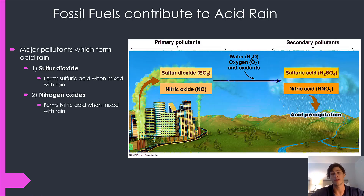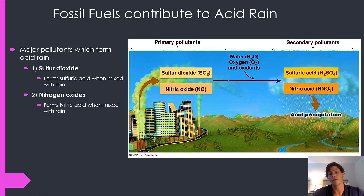There are two major pollutants that cause acid rain. First is sulfur dioxide, which is produced from the incomplete burning or incomplete cleaning and scrubbing of coal. Sulfur is a natural particle normally found in coal compounds, but when coal is burned, that sulfur reacts with ambient oxygen molecules to form sulfur dioxide.